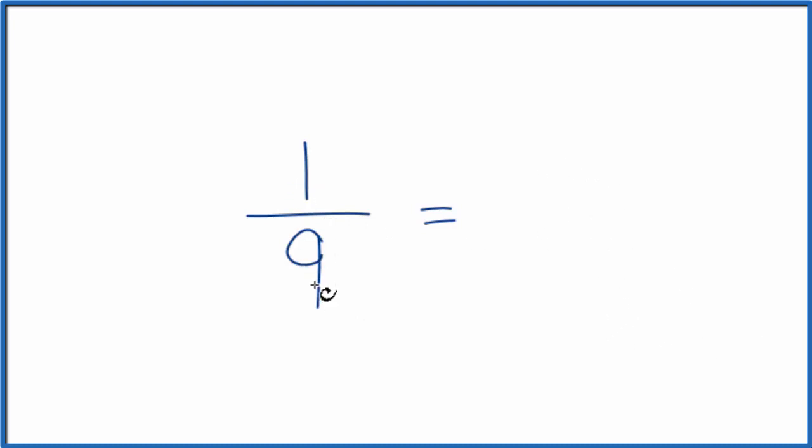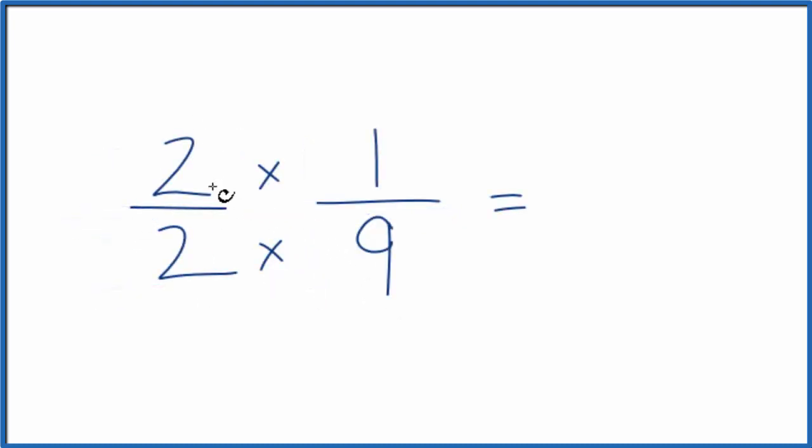So we could multiply one-ninth by one, but instead of one, let's use two over two. Because two divided by two, that's just one. So we're really multiplying by one. We don't change this value, but we end up with two times one is two. Two times nine, that's 18. So two-eighteenths, that's equivalent to one-ninth.